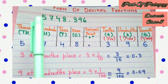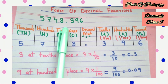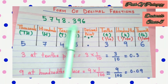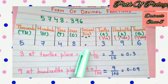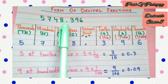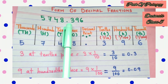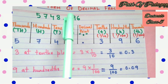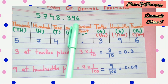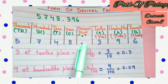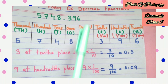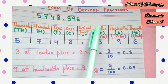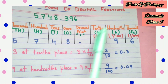After the whole number there is a decimal point, so just write down the decimal point. After the decimal point comes the fractional part — this is the fractional part, not the whole part. So now, what would be the place values of the fractional part after the decimal point?